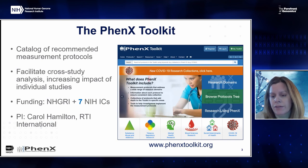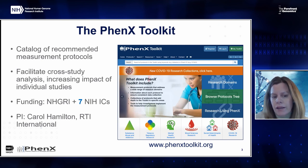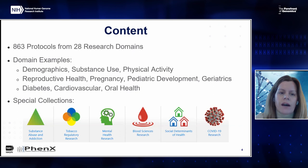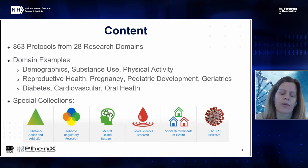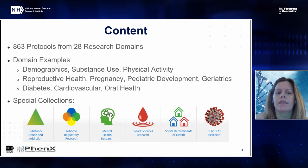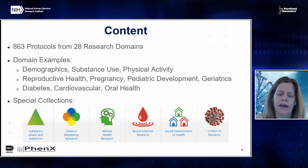There are now seven other institutes that contribute co-funding to this effort. The PI is Carol Hamilton from RTI International. Currently in the PHENIX Toolkit, there are over 860 data collection protocols from 28 different research domains. Examples of domains cover things like demographics and risk factors like substance use and physical activity, domains that span life stages including reproductive health, pregnancy, pediatric development, and geriatrics, and domains focused on a particular disease area like diabetes or oral health.